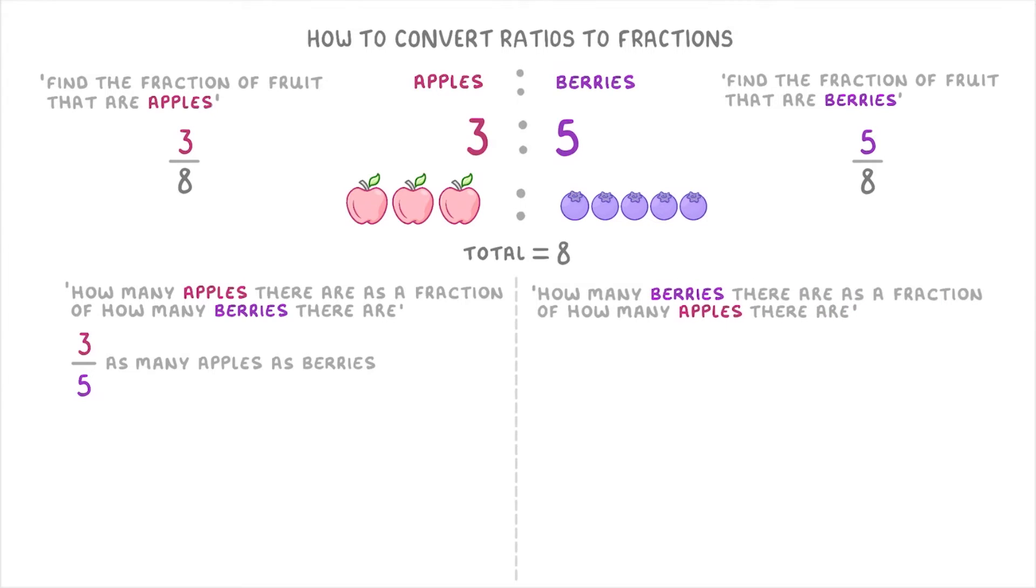Or to show how many berries there are as a fraction of how many apples there are, we just do it the other way around. So 5 over 3. So there's 5 thirds as many berries as there are apples.